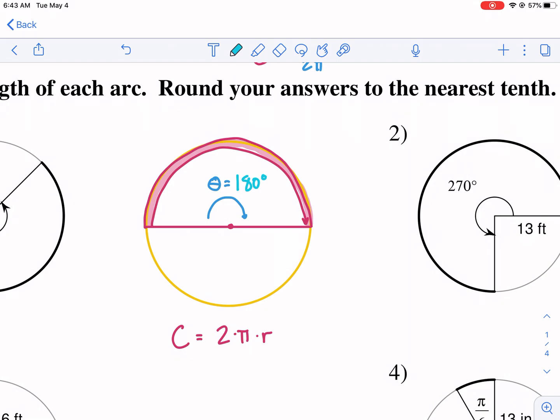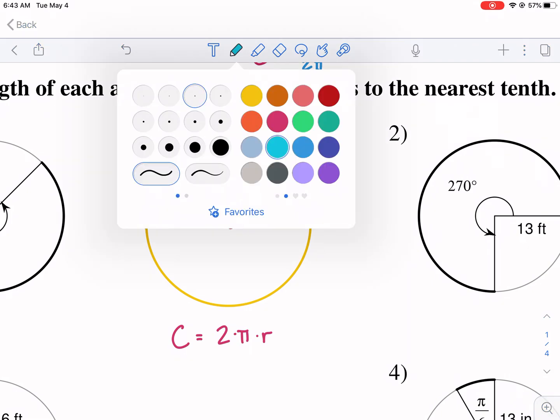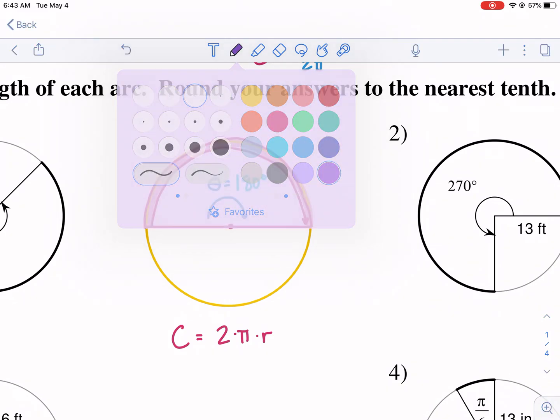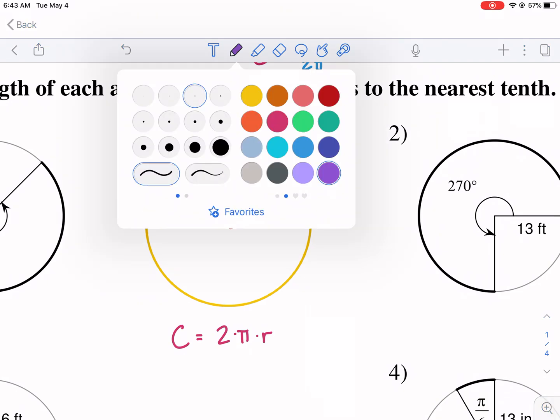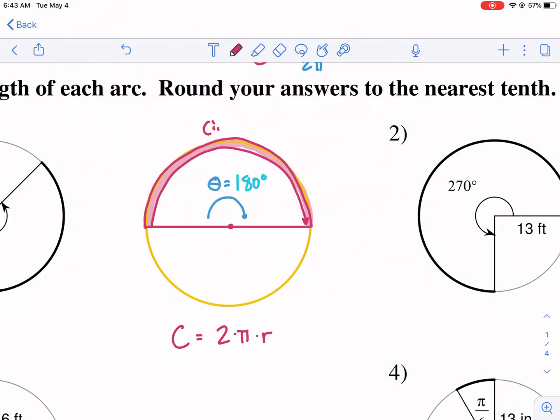Now, half is 180. We essentially would just take our circumference. In this case, let's just say our circumference equals 20 feet for this circle. So if we're trying to find the arc length, the arc length would be divided by two, divided by two because we only want half the circle. So it would be 10 feet for our arc length.